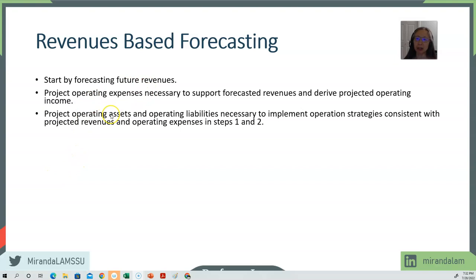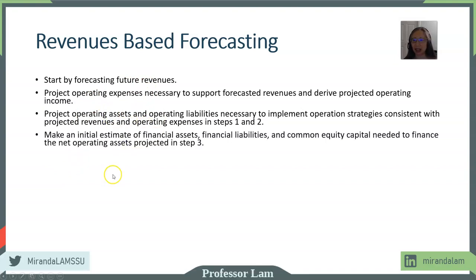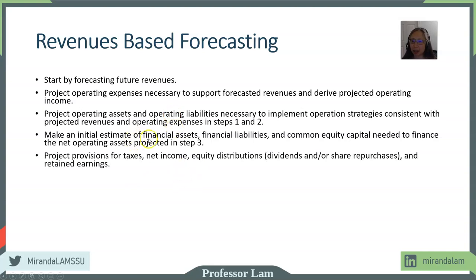So far we have operating income, operating assets, and operating liabilities. Now we need to think about what financing will be needed to purchase or finance the net operating assets. Once we have an estimate of financial liabilities, we'll have financing costs such as interest expense. Once we've identified the assets, we can compute depreciation. That gives us taxable income, then provision for taxes, net income, equity distribution in the form of dividends or share repurchase, and finally retained earnings.